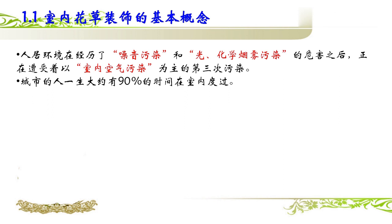我们在户外在雾霾、沙尘暴中生活，回到家里还要忍受第三次污染，就是室内的空间污染。而城市的人，一生当中应该说有90%的时间都是在室内度过的，一半时间在家里，还有相当一部分时间在办公室等等，都在室内。